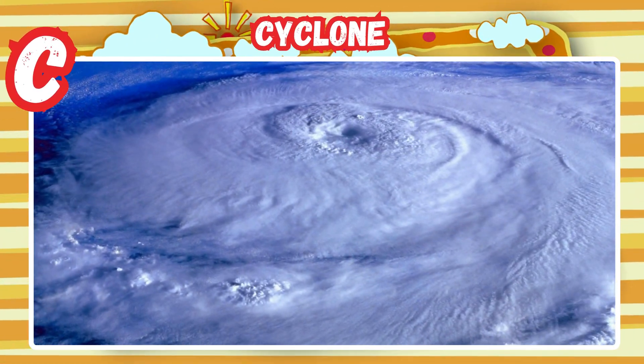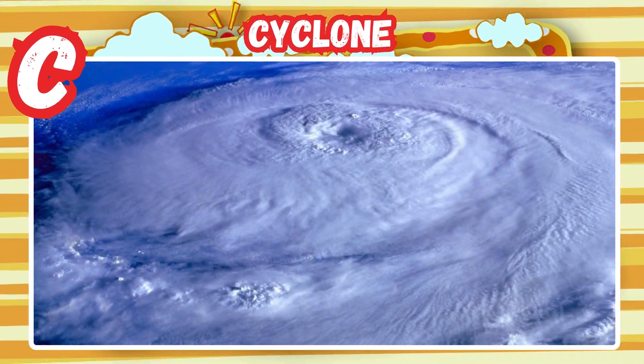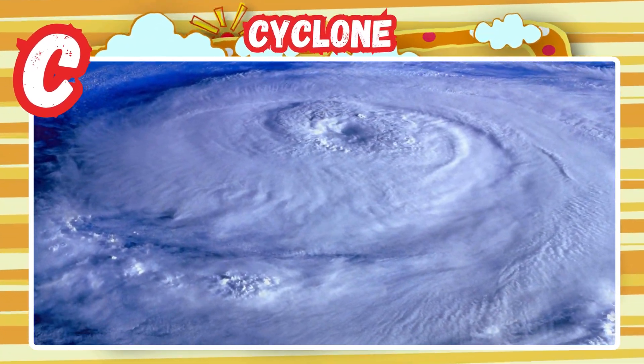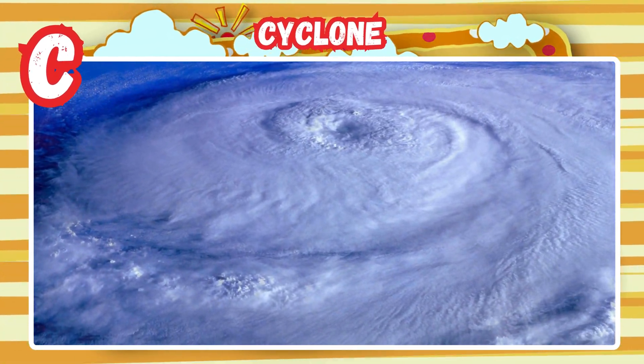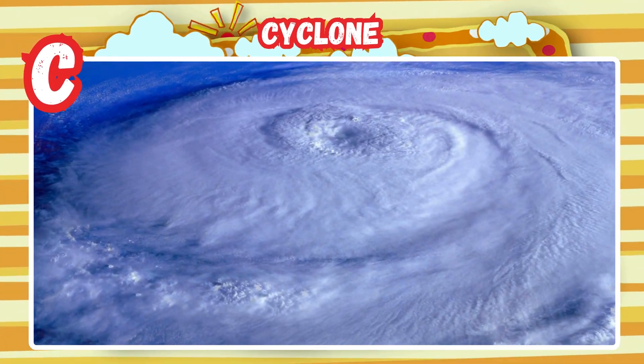C is for cyclone. A big storm forms over the sea. Strong winds and rain hit land.